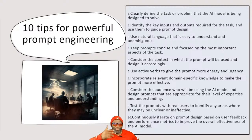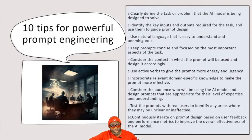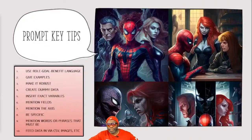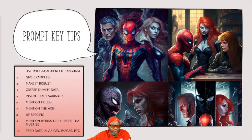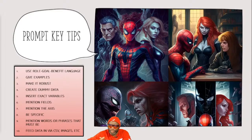I hope this is making more and more sense to you. Here are the last key tips for prompts: use the RGB language, give examples - the more robust the better, not just useless data but robust relevant data. You could also ask it to create dummy data. Insert exact variables - take exact words you want to see in the output and feed them in.